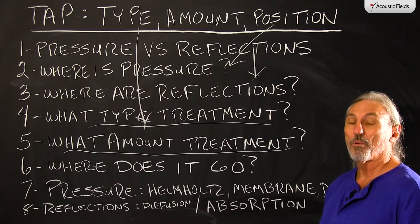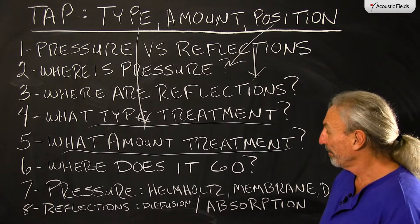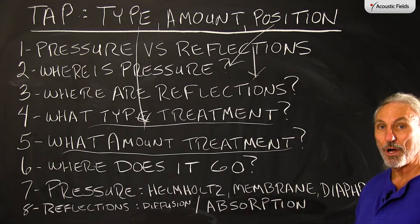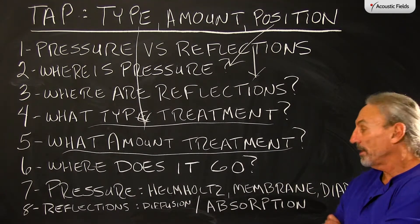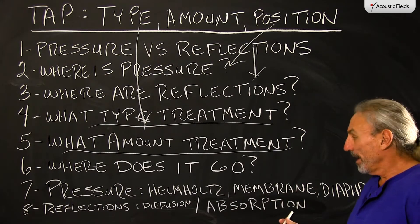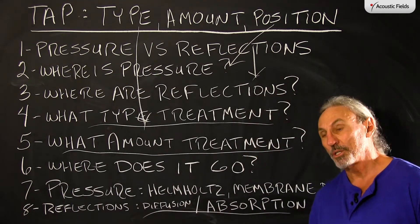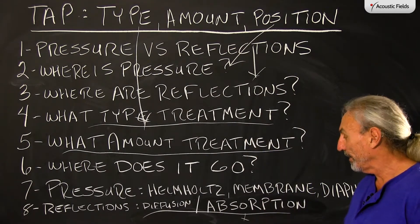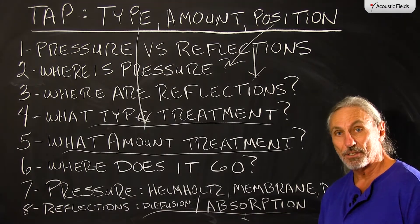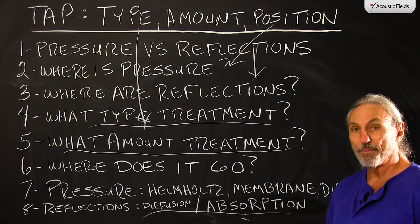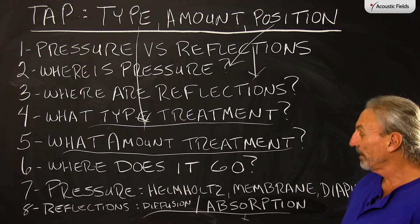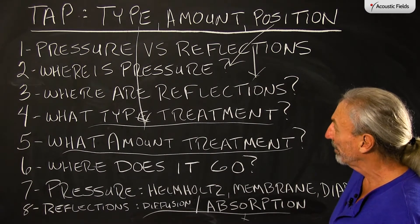A lot of people don't understand the quantities that you need. With pressure, Helmholtz, membrane, and diaphragmatic — we've walked through that many times in videos. These are our three types of devices for pressure. With reflections we have diffusion and absorption. With absorption we've got rates and levels to be careful about. With diffusion we have distances to consider: from the speakers to the listening position, from the rear wall to the listening position, and the front and side walls.